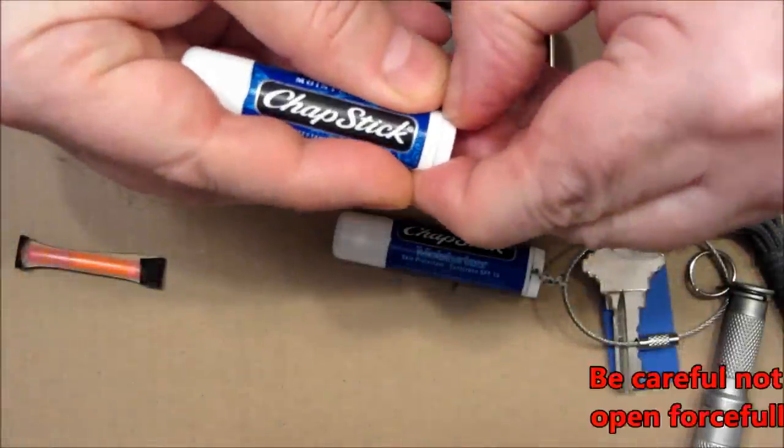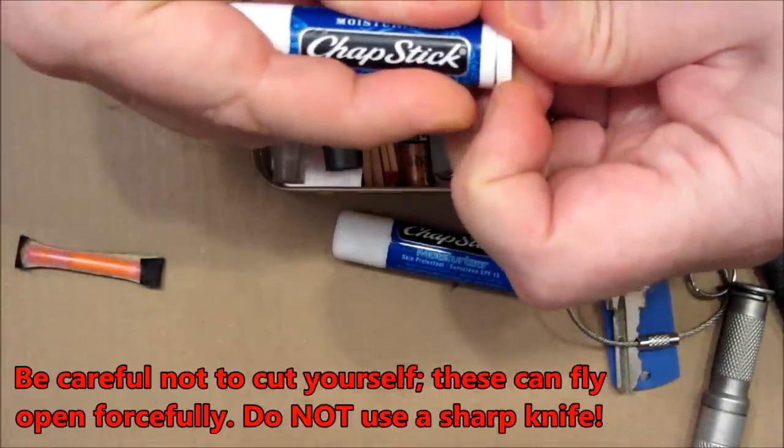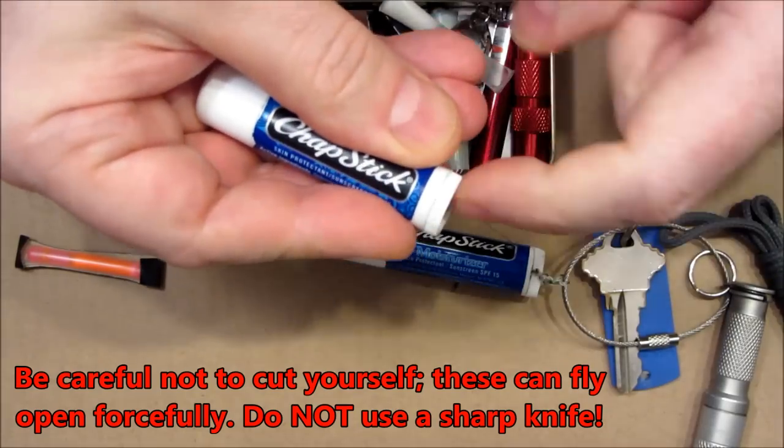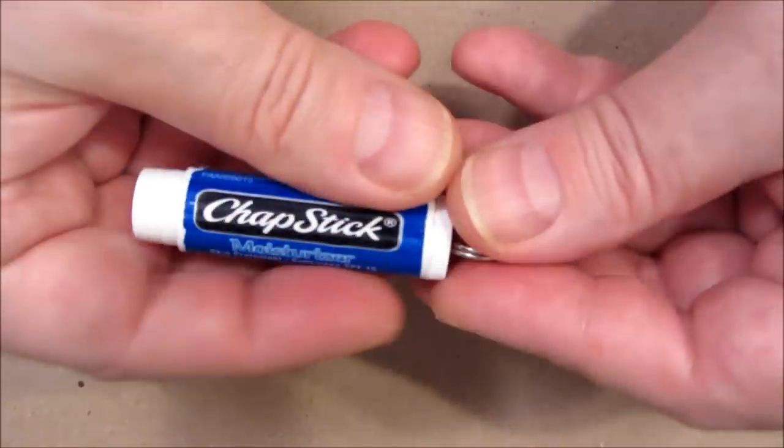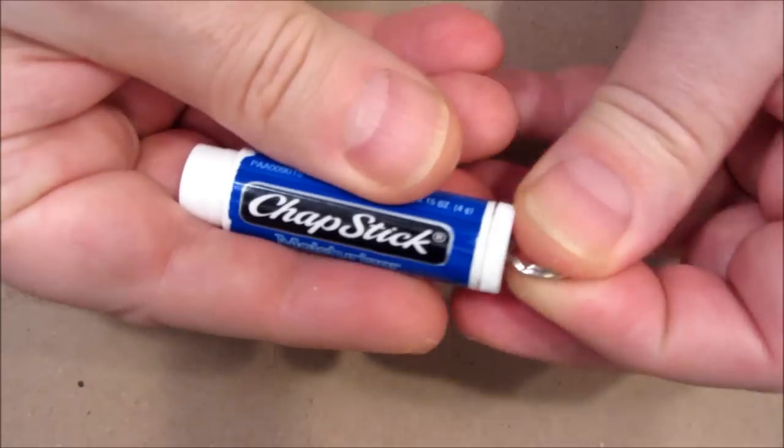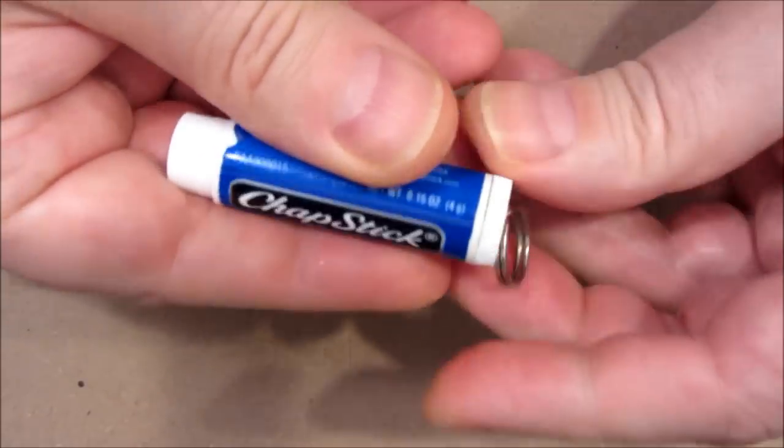Basically, you just want to pry this off with something like a butter knife, and do it very gently so you don't break that inner mechanism. Unfortunately, I have yet to discover a bulletproof method of pulling these off without breaking them.